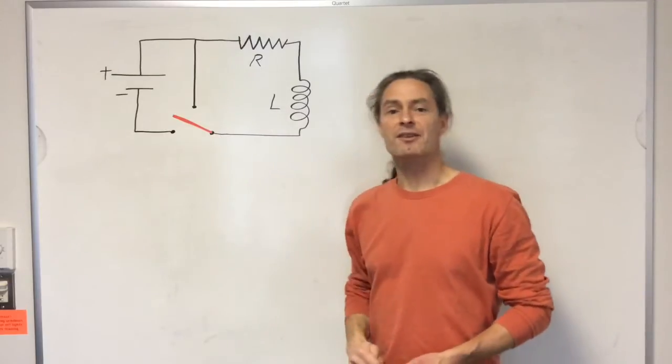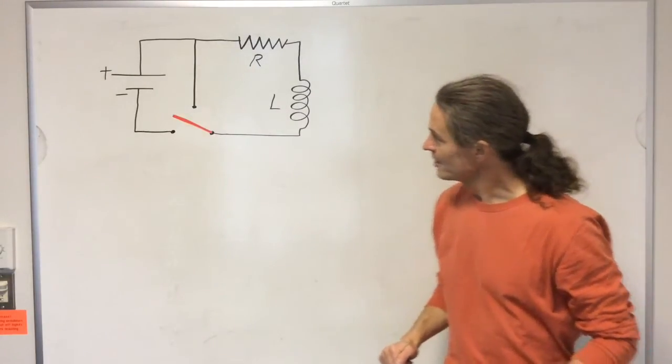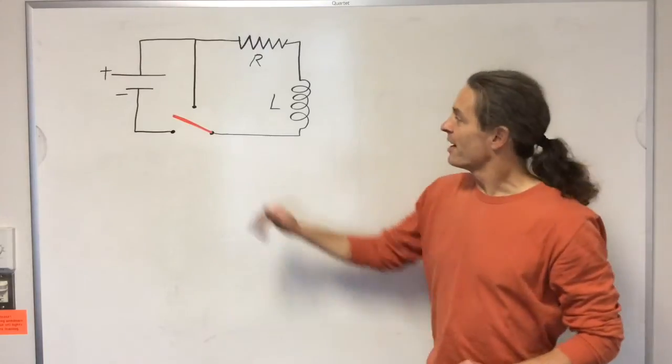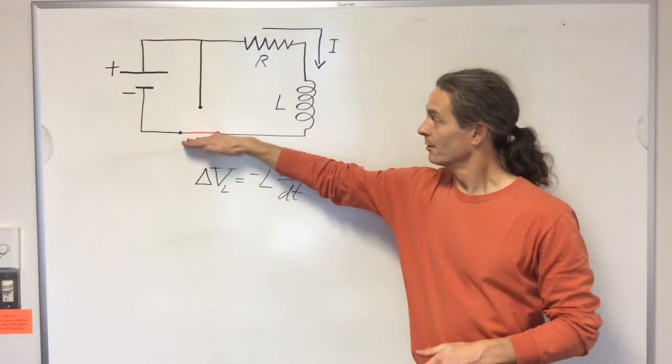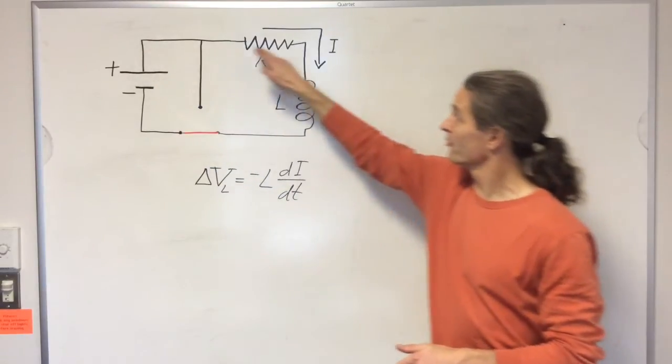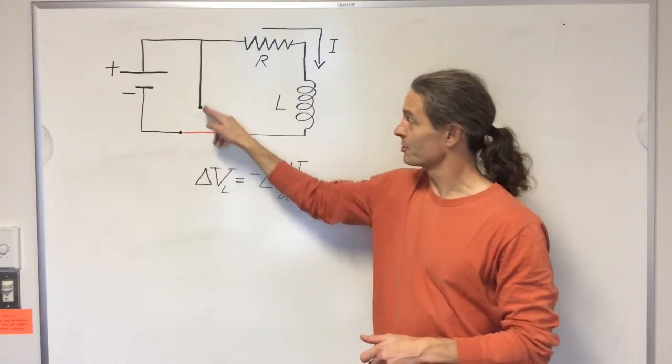At present we have neither, so there's no current flowing in this circuit at all. Now let's imagine taking the switch and closing it right here. So now current will begin to flow along this outside loop. None can flow here of course because there's no connection.